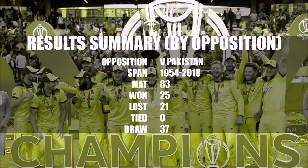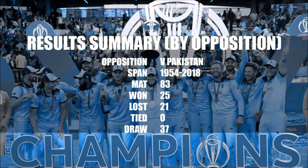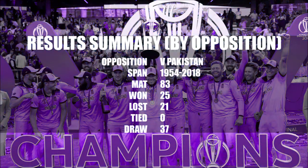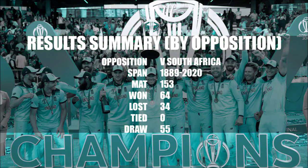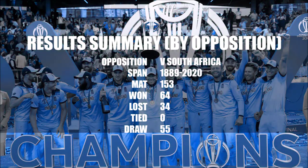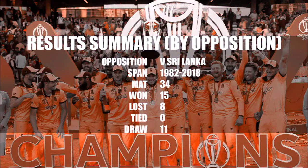Results summary against Pakistan: Span 1954 to 2020, matches played 83, won 25, lost 21, drawn 37. Results summary against South Africa: Span 1889 to 2020, matches played 153, won 64, lost 34, drawn 55.